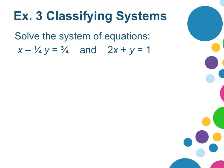For example 3, we're asked to solve this system of equations. I would like to clear the fractions from this equation, so I'll multiply all three terms by 4. And it becomes 4x minus y equals 3.